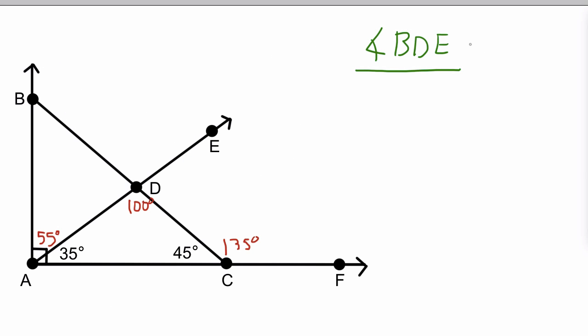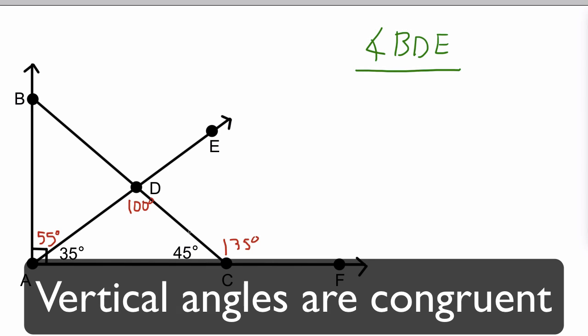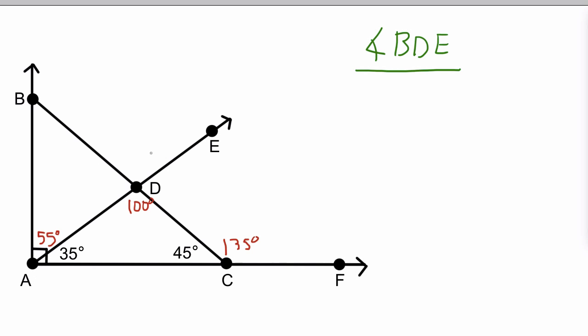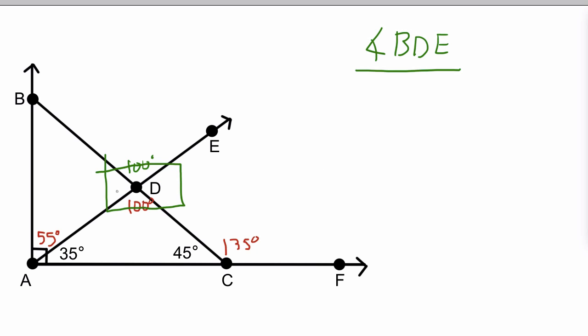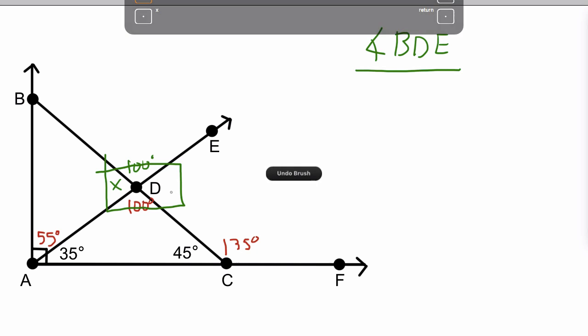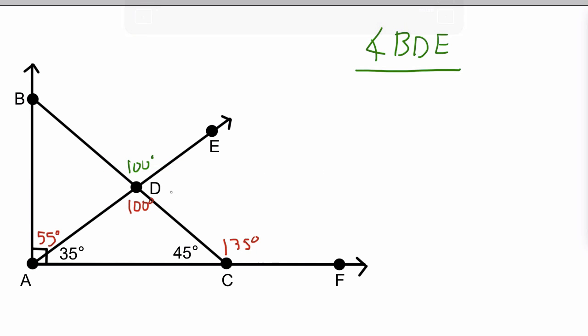Now we're talking about angle BDE. This is probably the easiest of all of them because we don't need to do any math here at all. We know that vertical angles are congruent, and the opposite angle of BDE is ADC. Since they're congruent, we know that angle BDE is also 100 degrees. Likewise, those two remaining angles will be equal as well.